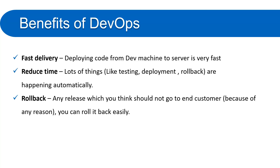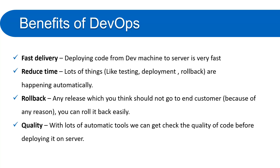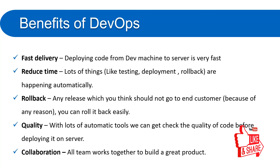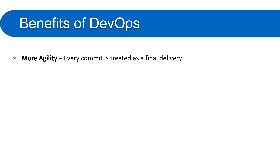Fourth, quality — with loads of automatic tools we can check the quality of code before deploying it to the server. You can apply manual or automatic testing, and DevOps ensures quality work goes to the server. If there is a problem you will know, you can fix it, push again, and run the entire process to make a successful deployment. Fifth, collaboration — all teams work together to build a great product, whether you are from management, development, or operations.